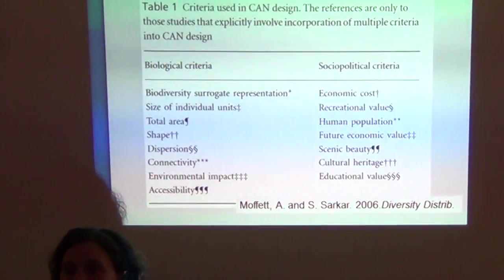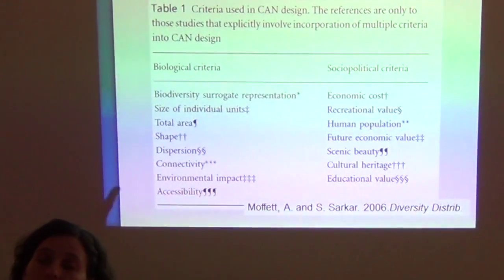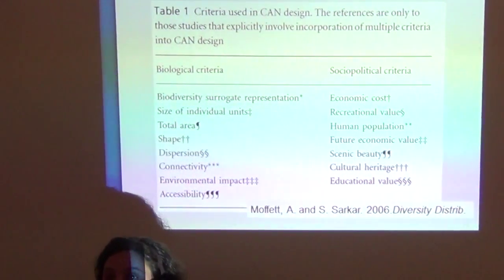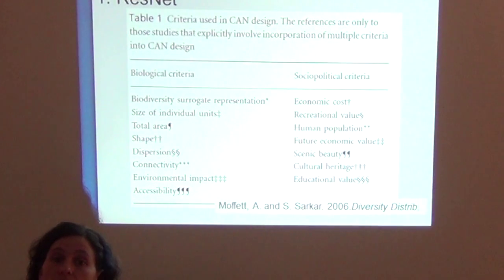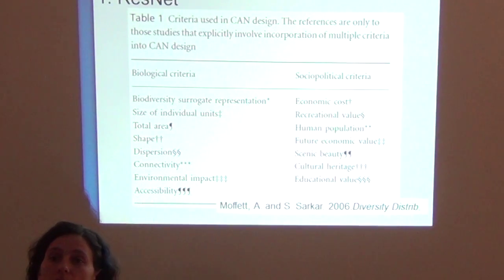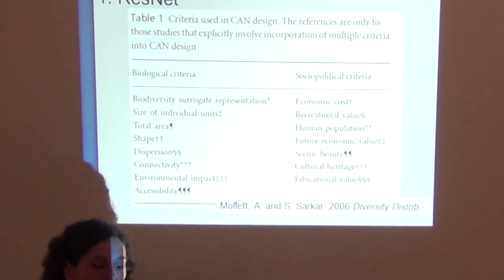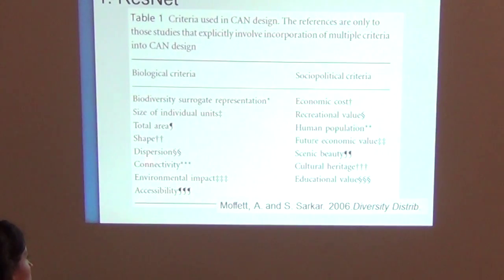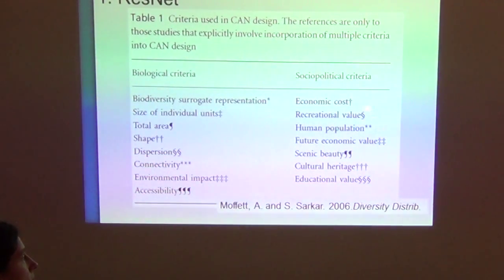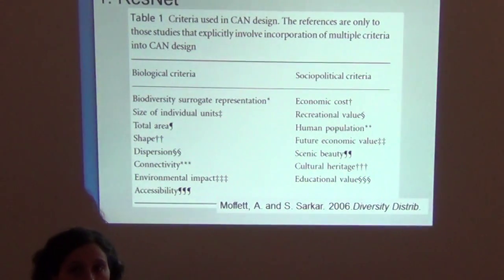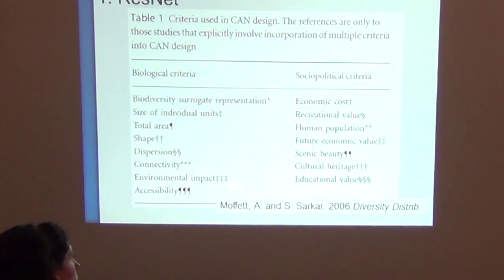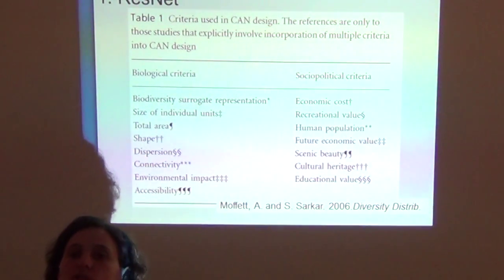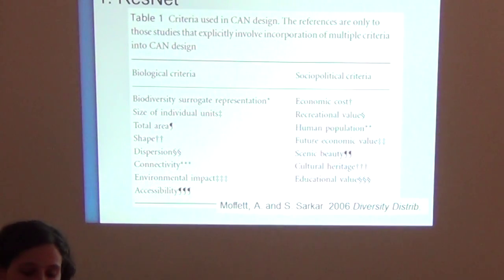Dispersion and connectivity are also very important. That goes back to metapopulation theory where we have source populations — if individuals don't have ways of dispersing into other patches of habitat, then our network of protected areas will be inefficient because we have isolated patches which the target conservation species cannot reach and make use of. We have to make sure that dispersion can occur and connectivity is present. All these symbols refer to various publications, because this publication is a review of published studies — these symbols point you in the right direction if you are interested in, for example, the shape effect.